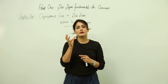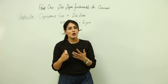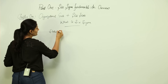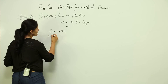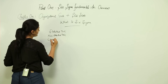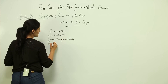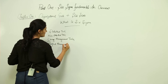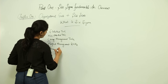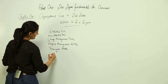Let me give you a basic definition of Six Sigma. Six Sigma is a business strategy which includes statistical tools, non-statistical tools, change management tools, project management skills, teamwork skills, plus a very important roadmap — DMAIC.